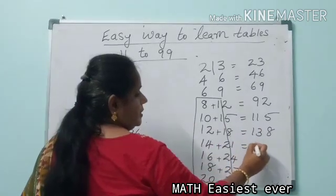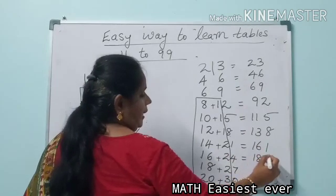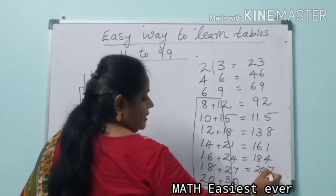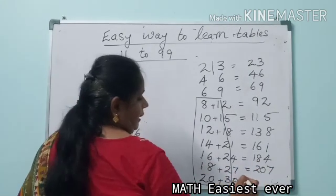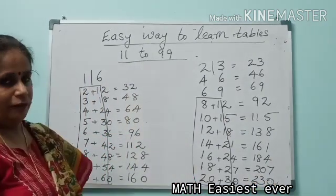14 plus 2 is 16, write that 1. 16 plus 2 is 18, write that 4. 18 plus 2 is 20, write 7. And 20 plus 3 is 23, write the 0. Here comes our table of 23.